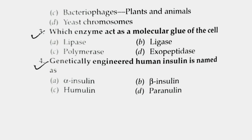Next question: Genetically engineered human insulin is named as what? Human insulin — the genetically engineered version — is named Humulin. Option number C. I hope the maximum questions were correct — comment in the comment section.